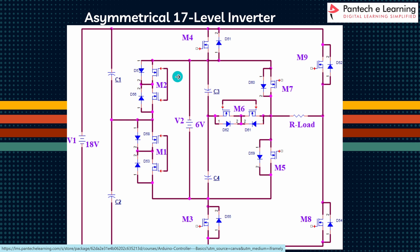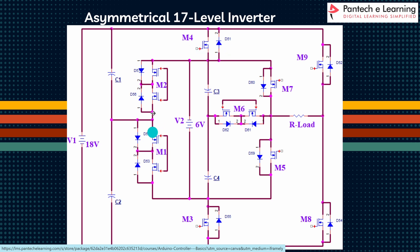Here, as I mentioned, we are using 2 inputs in a 3:1 ratio. V1 will be 18 volts and V2 will be 6 volts. These are the MOSFETs — these are the 3-quadrant MOSFETs and 4-quadrant MOSFETs.